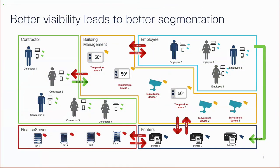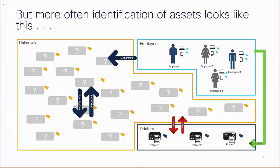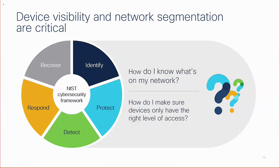The expectation is that users and devices should be clearly identified — contractor, building management system, temperature device, surveillance device, employees — so that you can apply policies and segmentation. However, in practice, while you can identify IT-managed and unmanaged devices, a good amount of enterprise IoT and medical IoT devices remain unknown. We should also align with the NIST cybersecurity framework and the ATT&CK Continuum — specifically two important things: identify and protect. You need to know what is in your network so you can apply the right level of access.